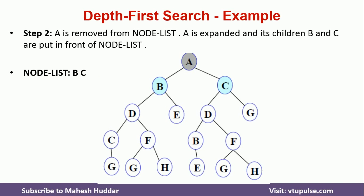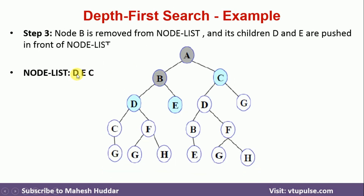Because B is not a goal node, we will find the successors of B. The successors of B are D and E. We will add D and E into the node list by removing B. Now the node list will look like: D, E, C. Again, we will take the first element from the node list, which is D. We check whether D is a goal node — D is not a goal node.